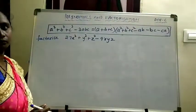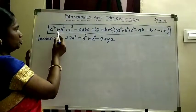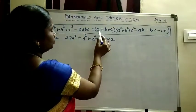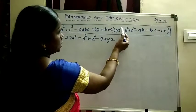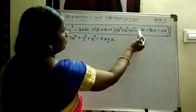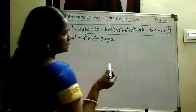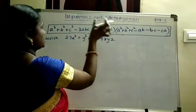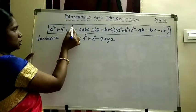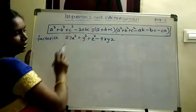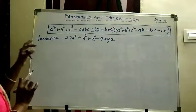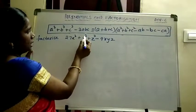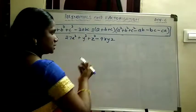One more identity: A cube plus B cube plus C cube minus 3ABC equals A plus B plus C into A square plus B square plus C square minus AB minus BC minus CA. It is also one identity. If you multiply these two terms, you will definitely get A cube plus B cube plus C cube minus 3ABC. Based on this identity we will do one problem: factorize 27x cube plus y cube plus z cube minus 9xyz.